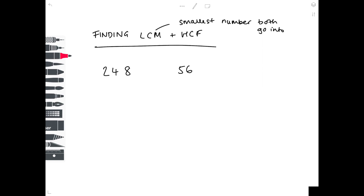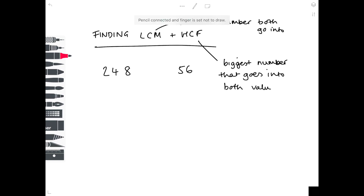The highest common factor is different — you're looking for the biggest number that goes into both values you've been given. So in order to do this, we need to write both numbers as products of prime factors, which sounds complex. Let's just remind ourselves what a prime number is.